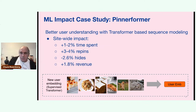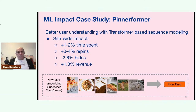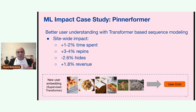Here's a great example: Pinnerformer, which achieves better user understanding using a transformer and sequence-based modeling. Work done in about the past year, it has had site-wide impact of +1-2% time spent, +3-4% repins, and +1.8% revenue. Pinterest is a very mature system, so the fact that utilizing new and better machine learning models at scale has had such a large impact has been surprising to us all and shows the power of these systems, motivating us to continue this work and invest more.